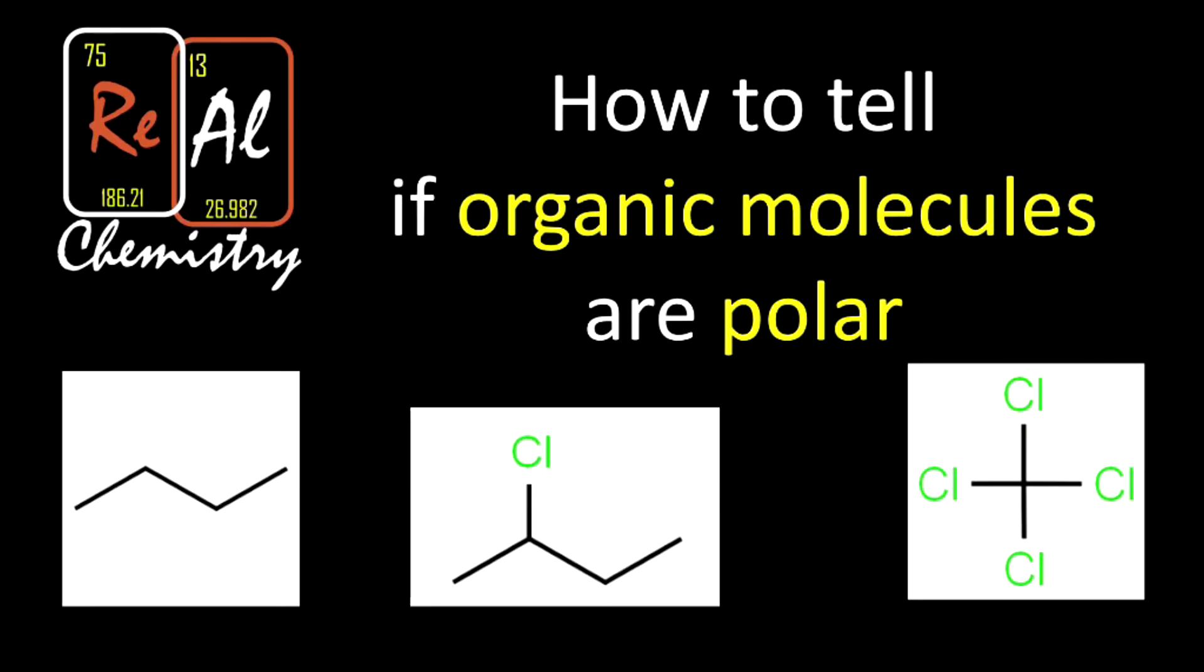What is up everyone, today on the show we're going to talk about how to tell if organic molecules are polar. Organic molecules contain mostly carbon and hydrogen, and they're the subject of organic chemistry. So it's pretty common to move from general chemistry to organic chemistry, and you still have to determine if molecules are polar or not. Turns out this is actually way easier than it was in Gen Chem. So here's what we're going to do in this lesson.